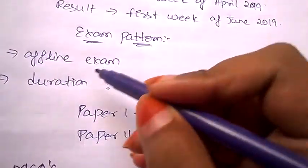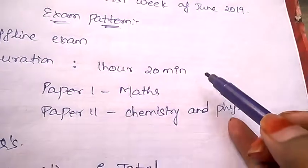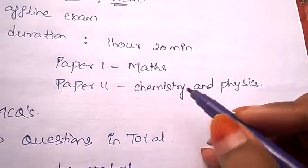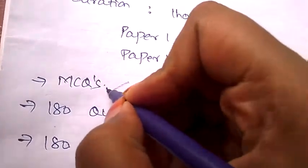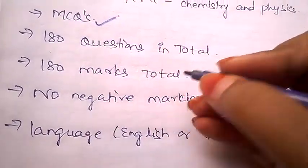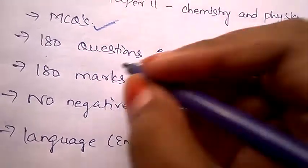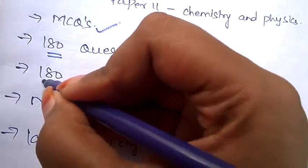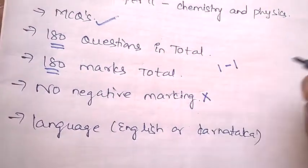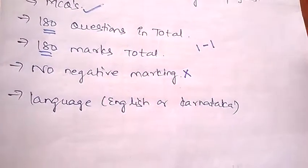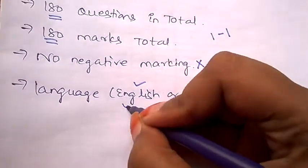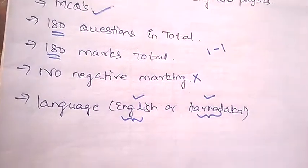It is an offline exam with a duration of one hour and 20 minutes. Paper one contains mathematical questions and paper two has chemistry and physics questions. You need to answer multiple choice questions — there are 180 questions in total, with one mark per question, giving 180 marks in total. The best part is there is no negative marking, so you can attempt all the questions. The exam is available in two languages: English and Kannada.